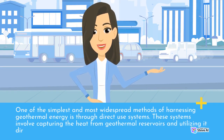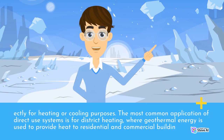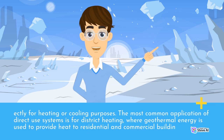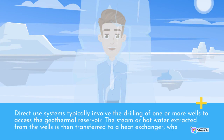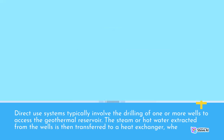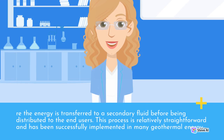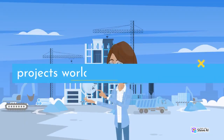These systems involve capturing the heat from geothermal reservoirs and utilizing it for heating or cooling purposes. The most common application of direct-use systems is for district heating, where geothermal energy is used to provide heat to residential and commercial buildings. Direct-use systems typically involve the drilling of one or more wells to access the geothermal reservoir. The steam or hot water extracted from the wells is then transferred to a heat exchanger, where the energy is transferred to a secondary fluid before being distributed to end-users. This process is relatively straightforward and has been successfully implemented in many geothermal energy projects worldwide.